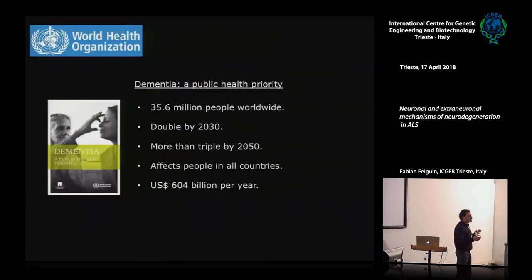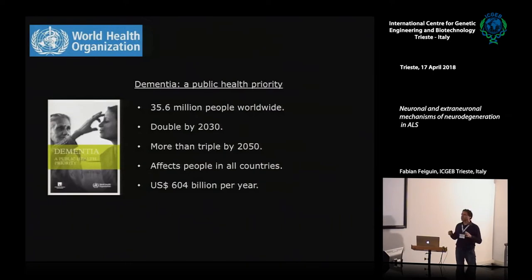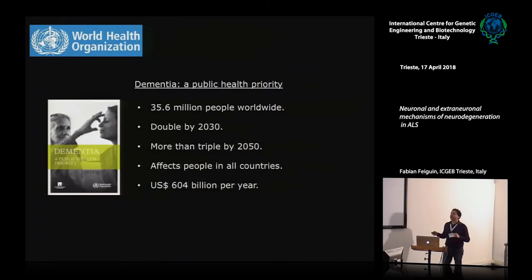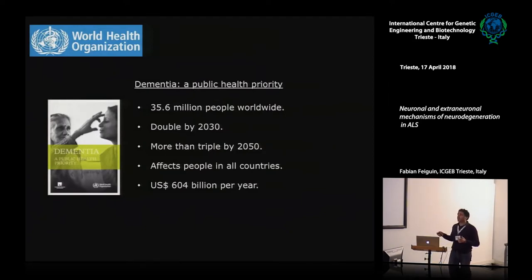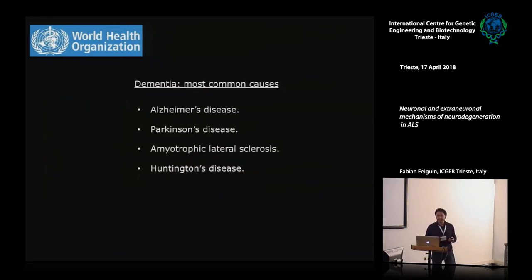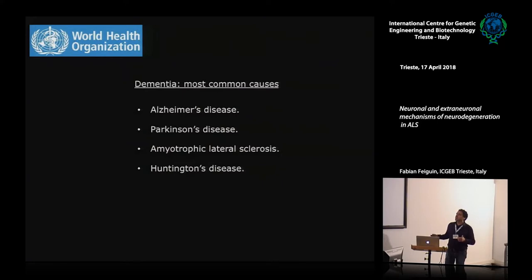The issue that I am interested in, getting into the specific topic, is neurodegeneration. The key is dementia. The big topics of dementia that occur because of neurodegeneration — this is a very huge health problem. With the aging of the population, this gets more frequent. The most common causes of dementia are these diseases; they are very known and very frequent.